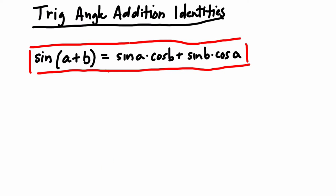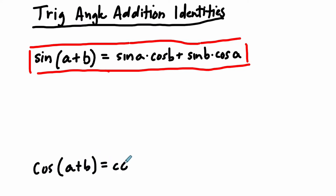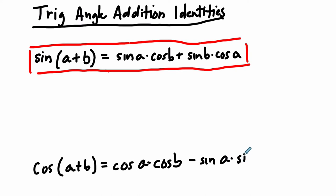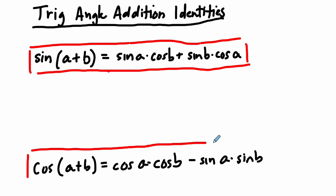The other foundational formula is your cosine addition formula: the cosine of A plus B equals the cosine of A times the cosine of B minus the sine of A times the sine of B. These two formulas are the ones you need to know.